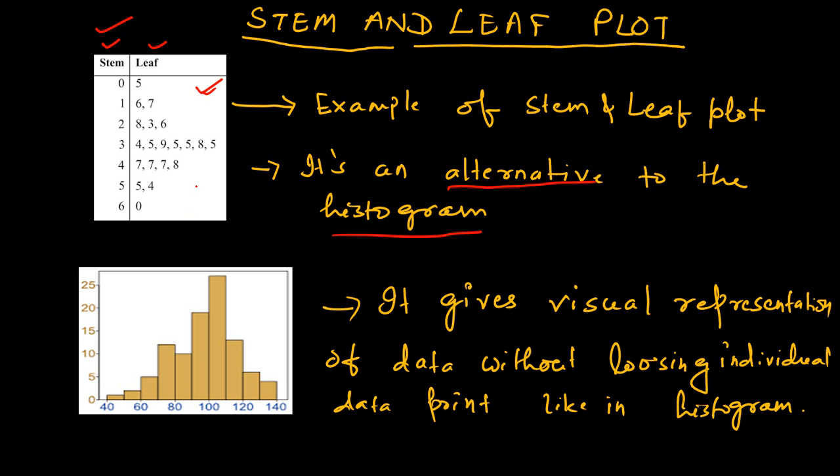One of the main differences between the stem and leaf plot and the histogram is that the stem and leaf plot gives the visual representation of data without losing the individual data points.